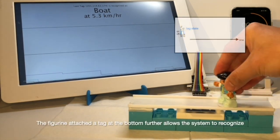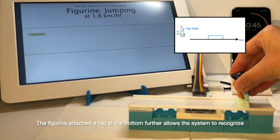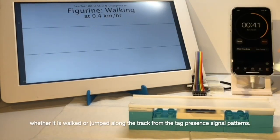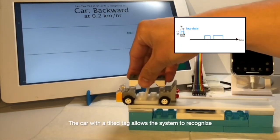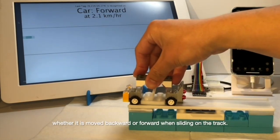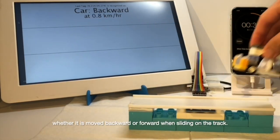The figure ring attached to the tag at the bottom allows the system to recognize whether it is walked or jumped along the track from the tag presence signal patterns. The car with the tilted tag allows the system to recognize whether it is moved backward or forward when sliding on the track.